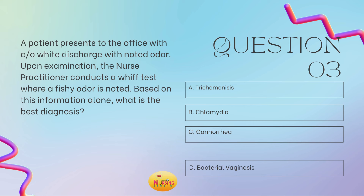Based on this information alone, what is the best diagnosis? The patient came in complaining of white discharge and an odor. The nurse practitioner conducts a whiff test and notes a fishy odor. These are classic key identifiers for bacterial vaginosis. Your best answer choice is D, bacterial vaginosis. You need to know those key identifiers: when I say fishy odor, whiff test, or clue cells — you say bacterial vaginosis. Make sure you know those key identifiers so you're not missing this, because exams want to know that you can quickly identify classic presentations.